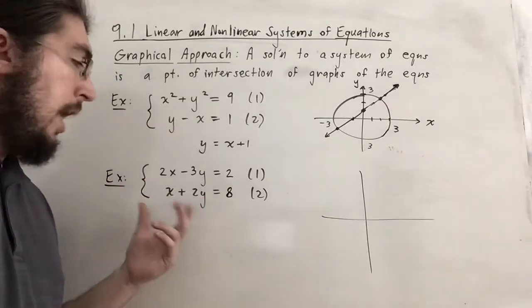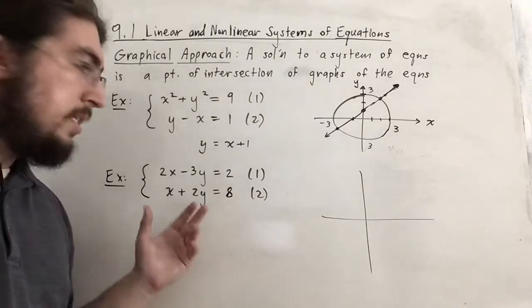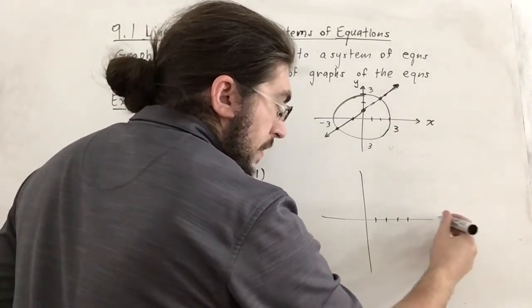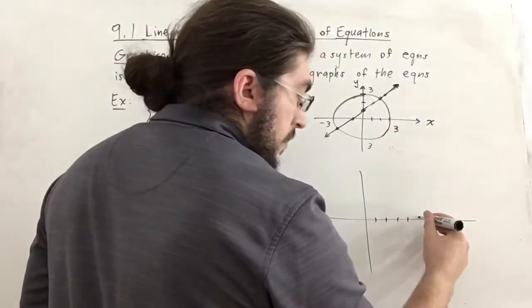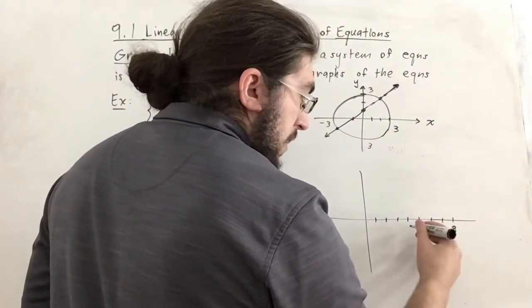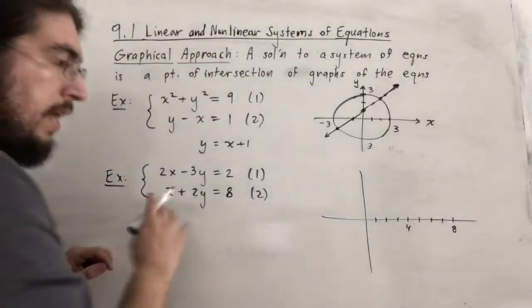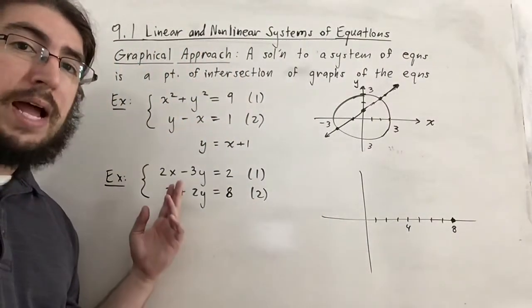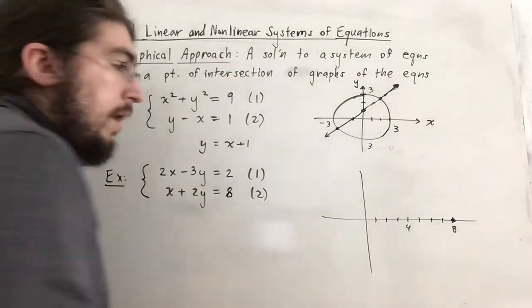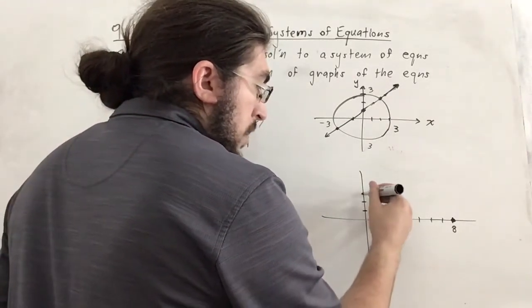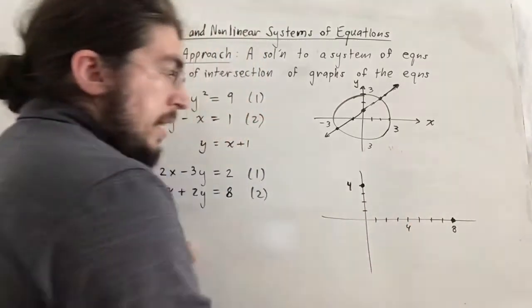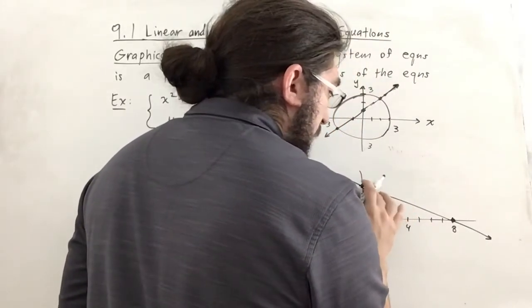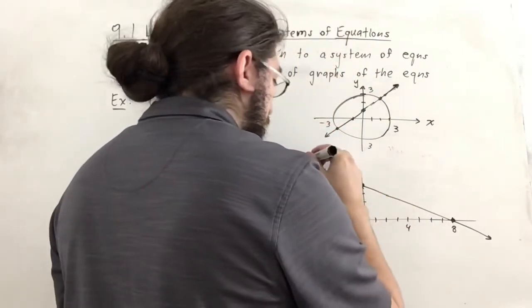The x-intercept is 8 on the x-axis and the y-intercept is 4 on the y-axis. Connecting these dots gives us the line, which is the graph of equation 2. For equation 1, the x-intercept is found by setting y=0: 2x=2, so x=1. Setting x=0 gives −3y=2, so y = −2/3, which is just above −1 on the y-axis.